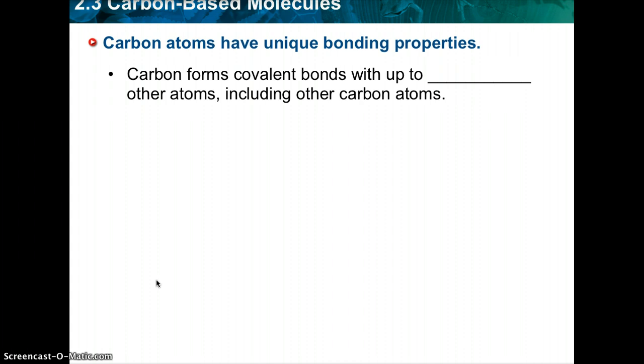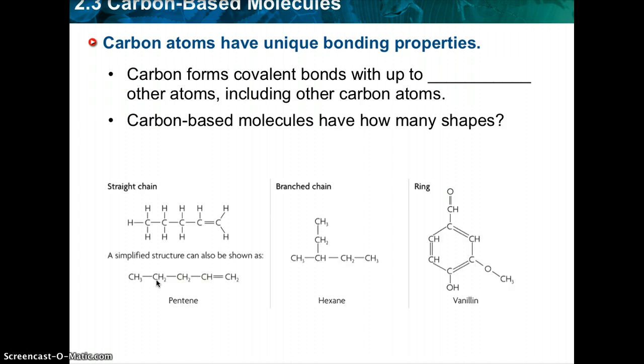Carbon-based molecules have three general structures. They have straight chains, as you can see here with the pentene on the left, branch chains like hexane in the middle, and they also have ring structures. So again, carbon-based molecules have three different shapes that they can take.